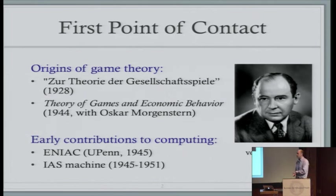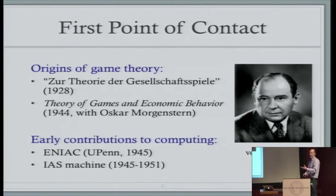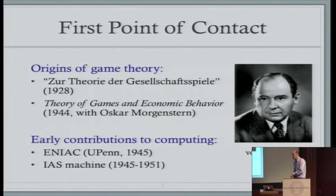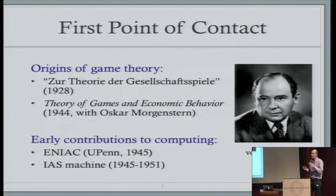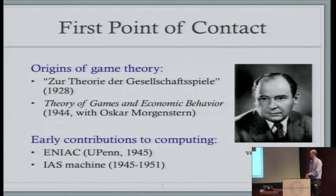For starters, there was a single individual here at the Institute who played a major role in the founding of both — John von Neumann, who we've already heard about. While he had worked out a lot of his theory of games in the 20s, in particular his min-max theorem, game theory really became a major subject with the publication of his book in 1944 with Oscar Morgenstern.